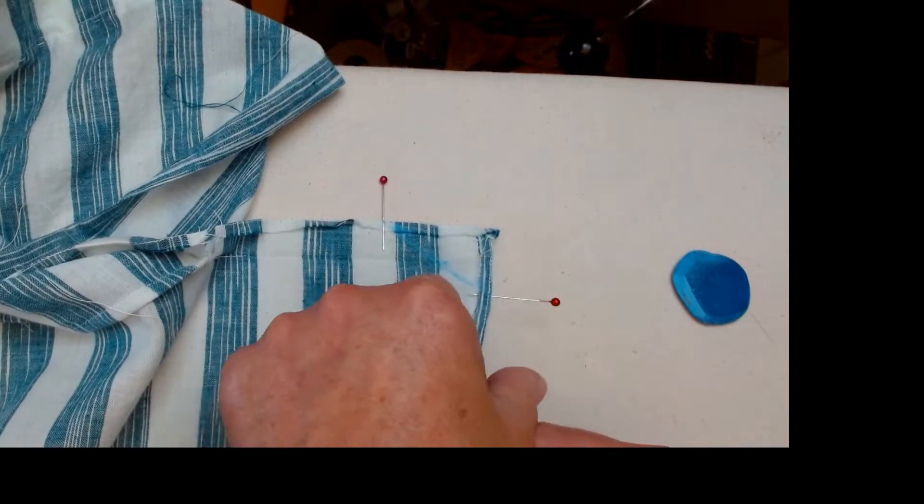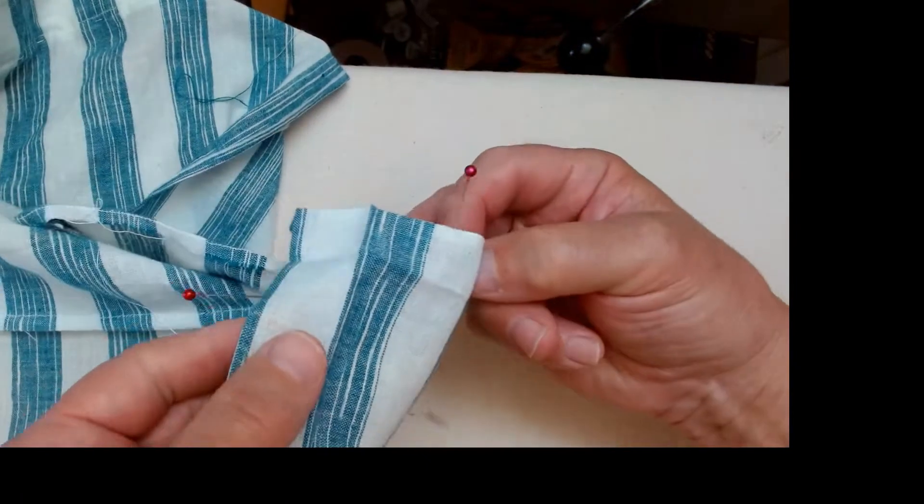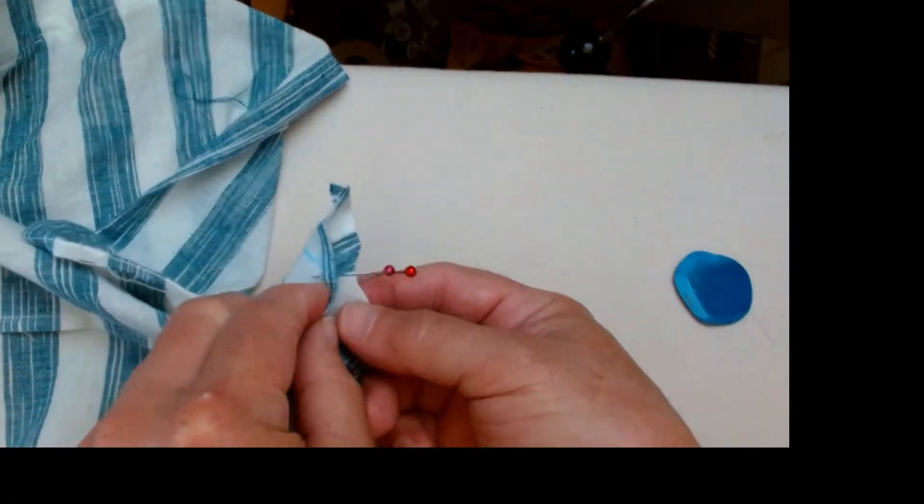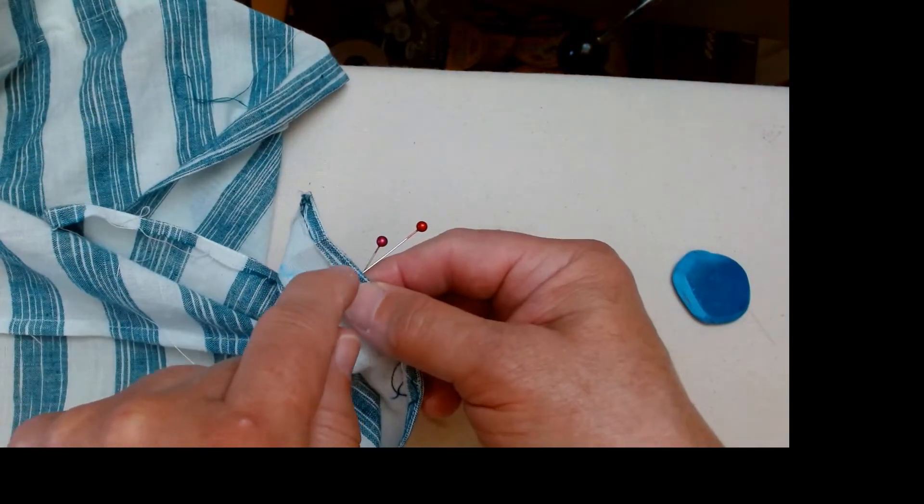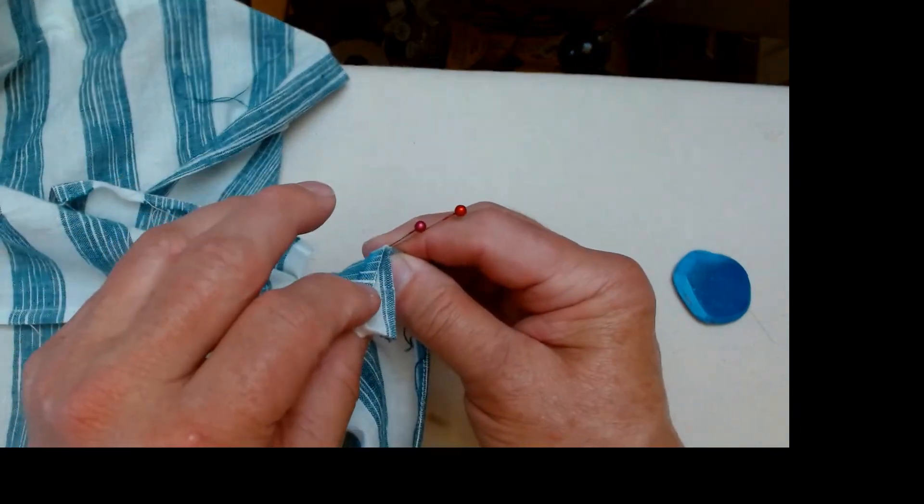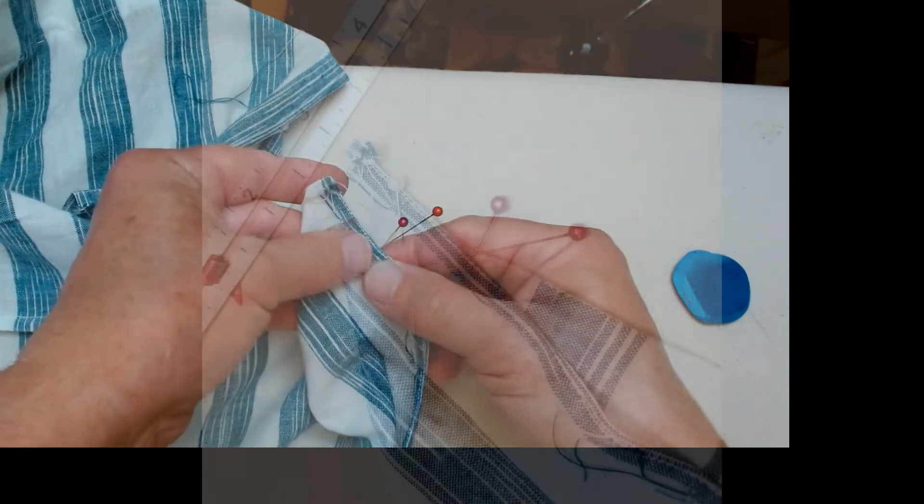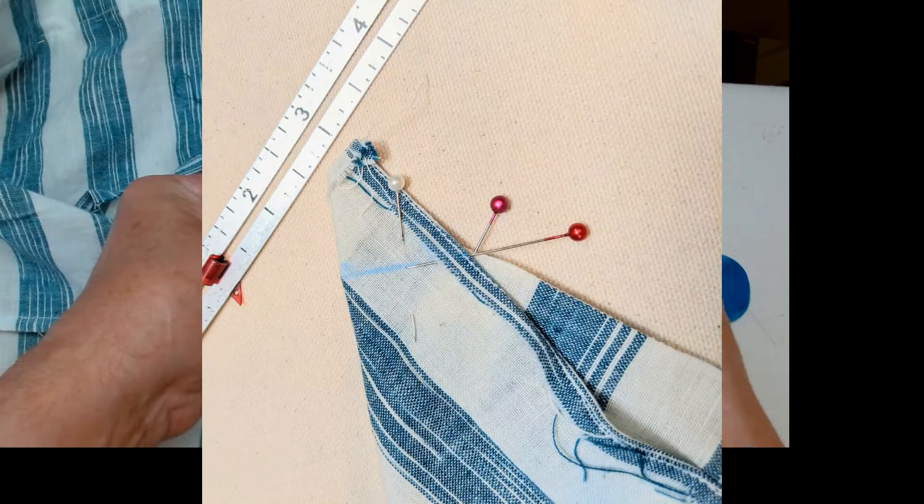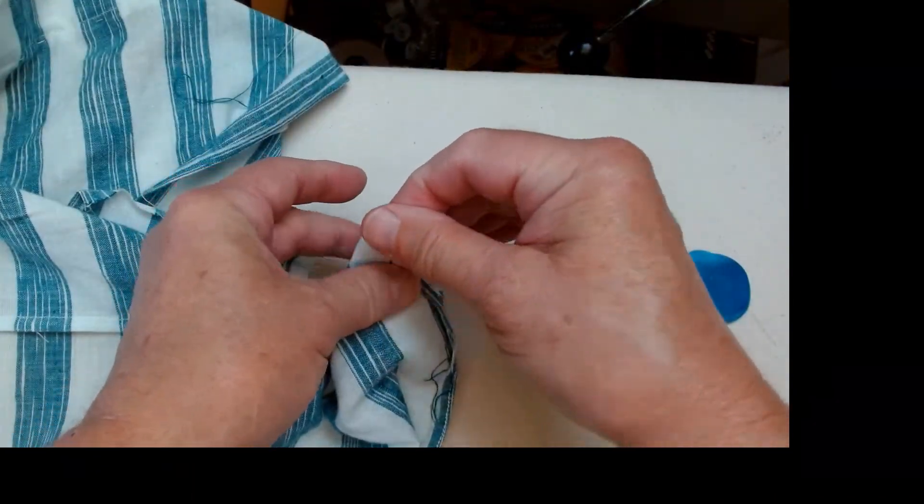In the next step, you're going to turn this over so that the right sides are together. And you're going to line up the pins so that they cross right here. You're going to get this kind of funny looking thing here, but don't worry about it. And I am going to take a pin and just pin these two layers together.